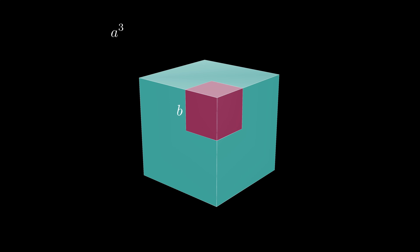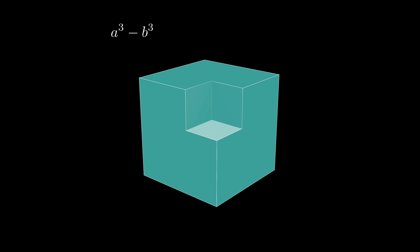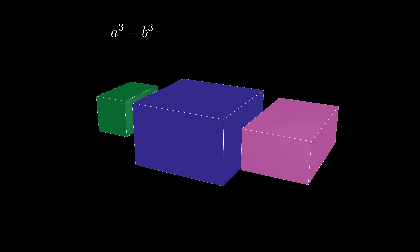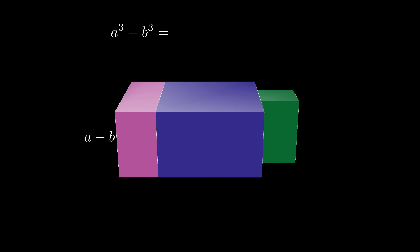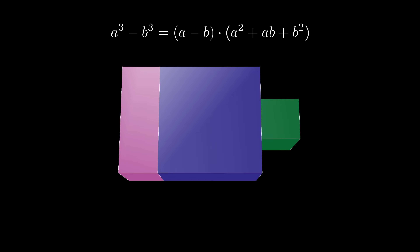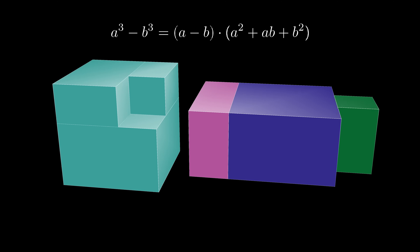The cutting and moving of regions works in higher dimensions too. We start with an a by a by a cube of volume a³ and remove an upper b by b by b cube, producing a solid with volume a³ − b³. This solid decomposes into three solids, each with one dimension of a − b. Moving and stacking them so they are all (a − b) deep, the volume equals (a − b) times the top area, which consists of a b by b square, an a by b rectangle, and an a by a square — giving top area a² + ab + b². So a³ − b³ = (a − b)(a² + ab + b²).